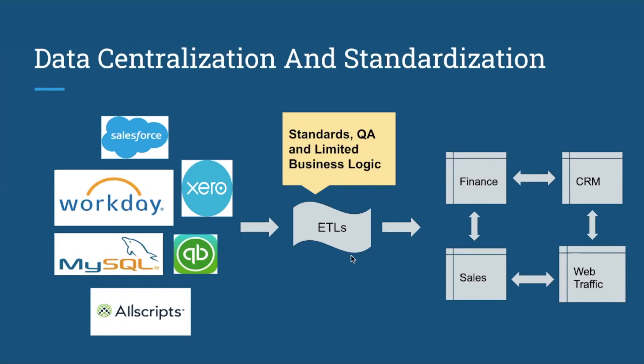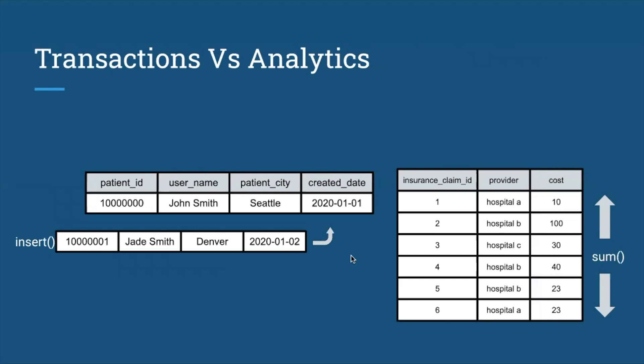The question also becomes: why are we duplicating the data? We're taking all this data that already exists, often in databases, and putting it into another database essentially. One of the main reasons is that we are dealing with two different types of problems. Typical application databases deal with what we consider transactions — for example, inserting a row like Jade Smith from Denver for some sort of patient record. This is just a single transaction.